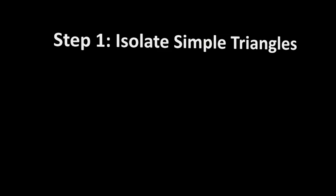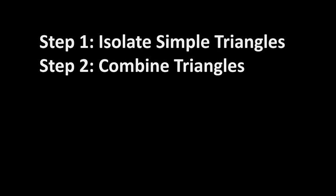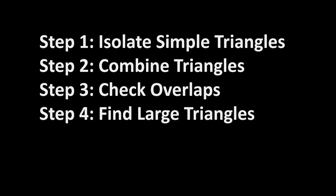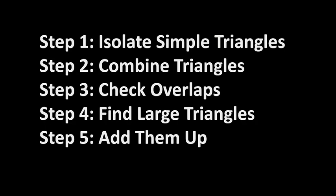For counting triangles in general, people use the following steps: First, find and count all the smallest triangles which don't have any other triangles inside them. Next, look for triangles made up of two or more simple triangles. Then identify triangles that form from overlapping lines. Next, count the largest triangles that span the entire figure or large portions of it. Finally, add all these triangles together for the total count.